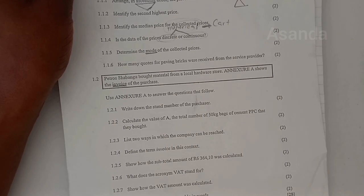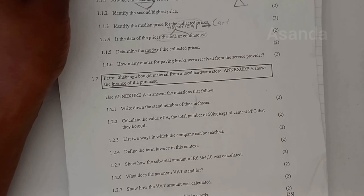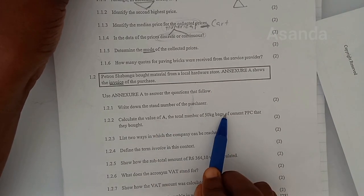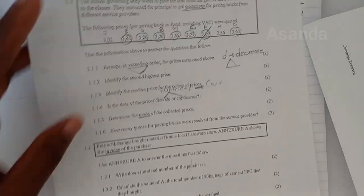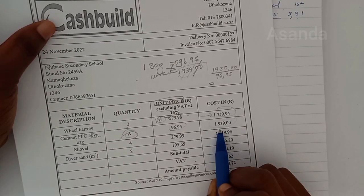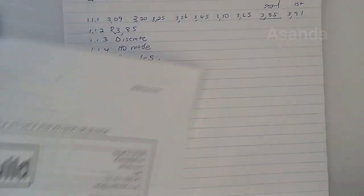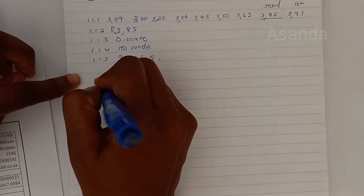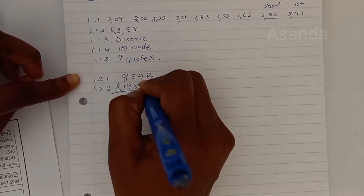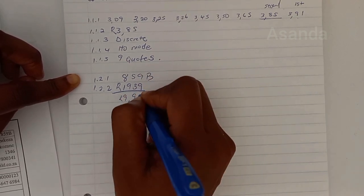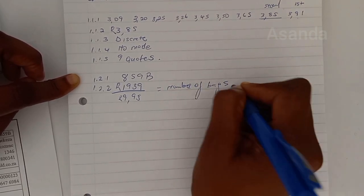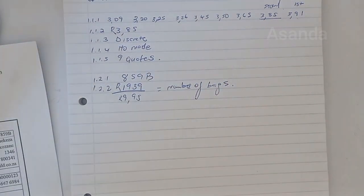Question 1.2.2: calculate the total number of 50 kg bags of PPC cement bought. We know one bag costs R96.95 and the total cost of all bags is R1,939. Dividing R1,939 by R96.95 gives us the number of bags — it doesn't matter how you think through it, as long as you divide the total by the unit price.